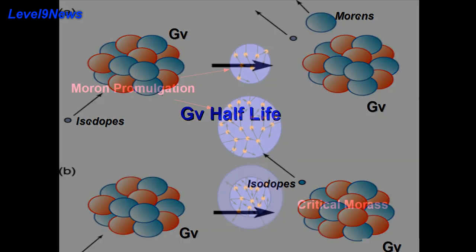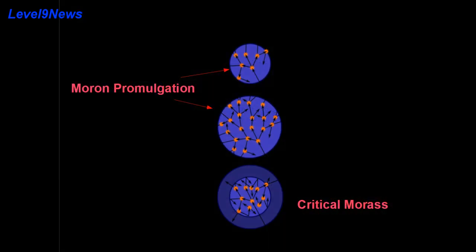This characteristic of moron promotion leads some scientists to believe that Governmentium is formed whenever morons reach a critical point of concentration. This hypothetical quantity is referred to as critical morass.